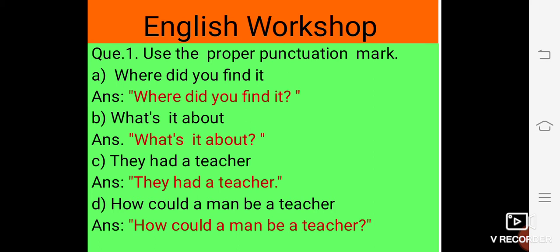Now, D is, how could a man be a teacher? This is a question. So we use the double inverted commas and question marks.